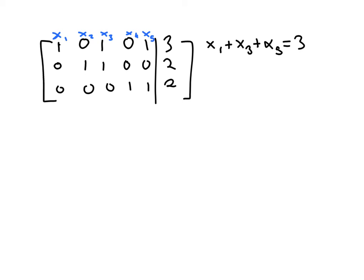The equation corresponding to the second row would be x2 plus x3 equals 2. And the equation corresponding to the third row would be x4 plus x5 equals 2.